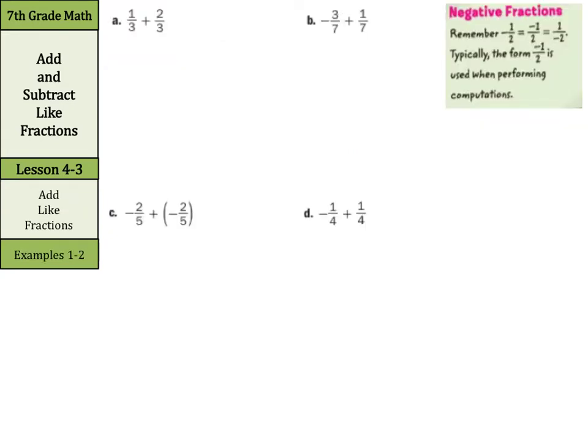So, let's look at these. Our first example is 1 third plus 2 thirds. Well, this is just 1 plus 2 over our common denominator of 3, so that's just 3 thirds, which is the same thing as 1.